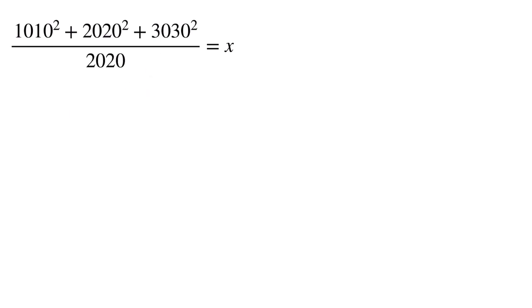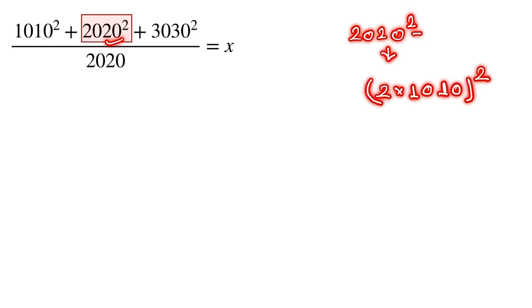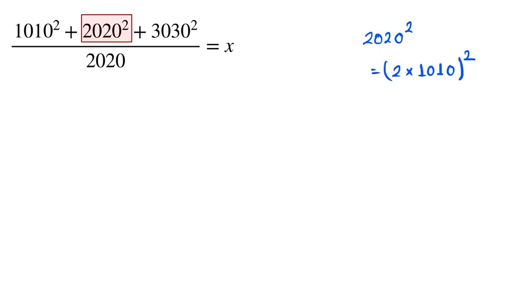At first we focus this point 2020 the whole square. This can be written as 2020 the whole square is written as 2 into 1010, the whole power is 2. Now it can be written as 2 to the power 2 into 1010 the power 2.